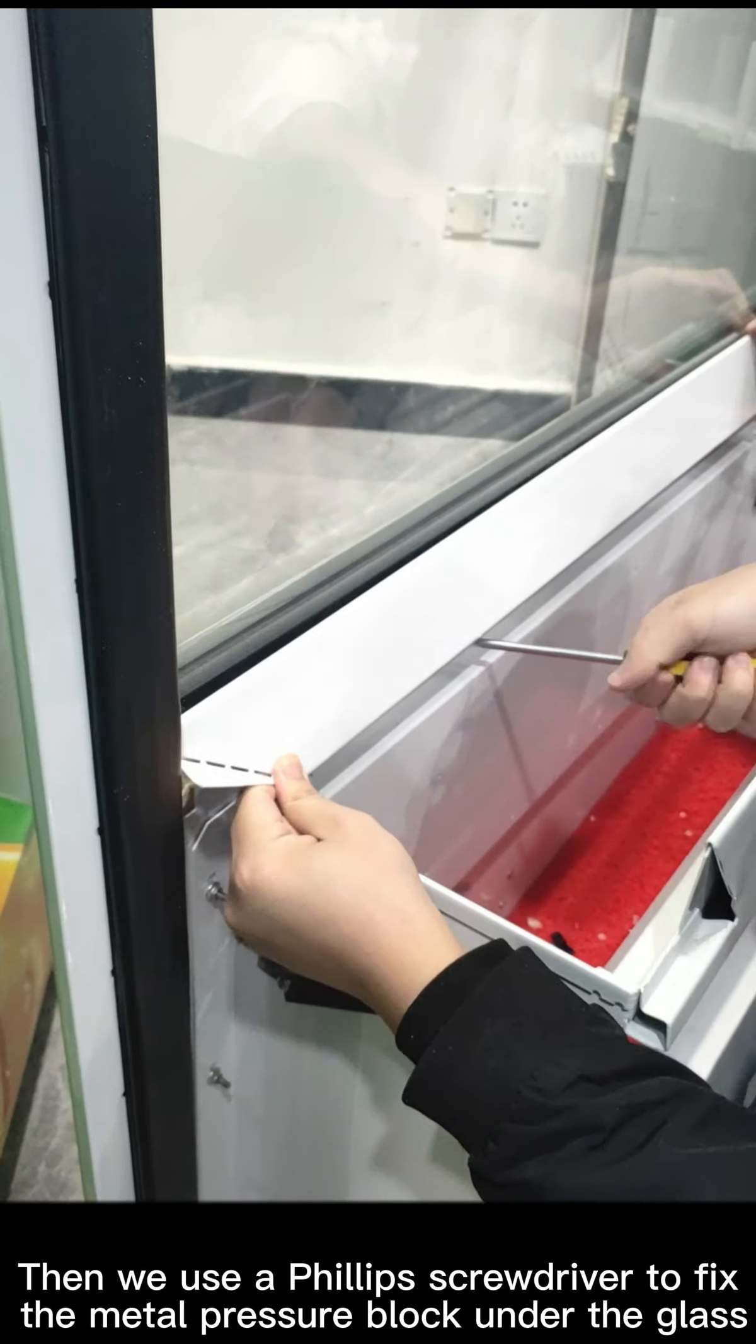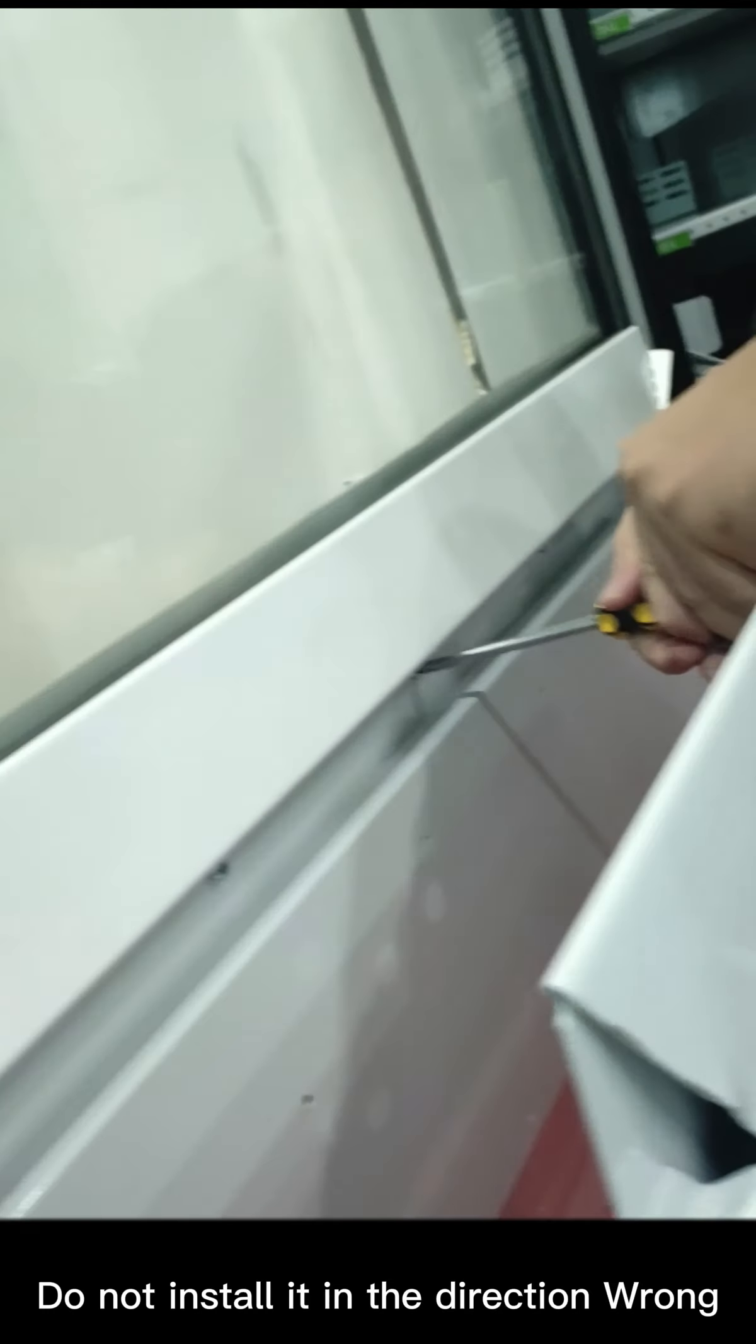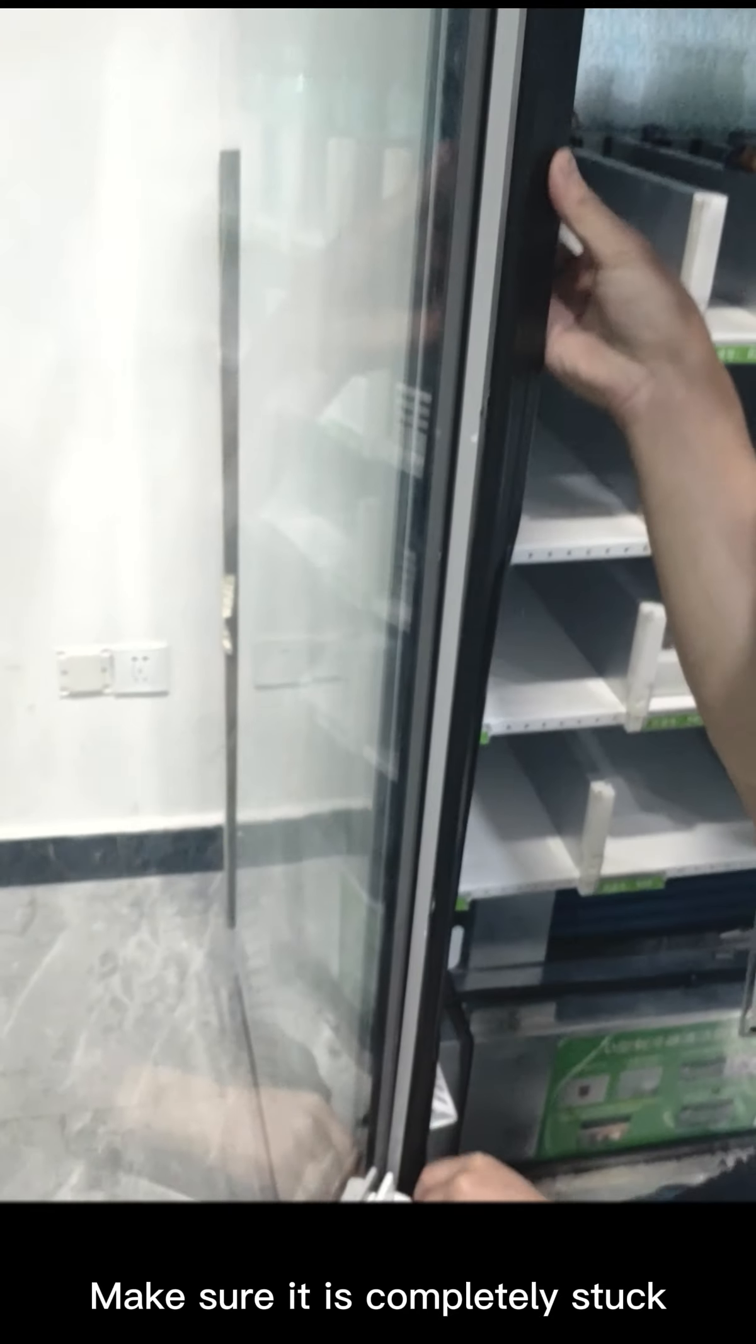Then we use a Phillips screwdriver to fix the metal pressure block under the glass. Do not install it in the wrong direction. Then fix the sealing ring in the plastic slot in the original way and make sure it is completely stuck.